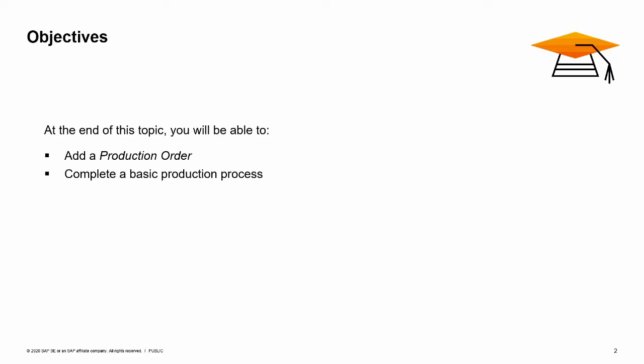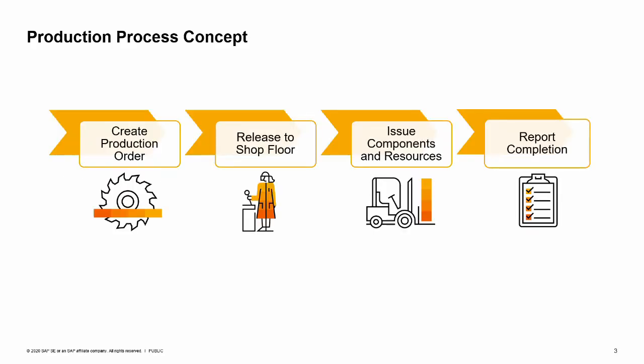At the end of this topic, you will be able to add a production order and complete a basic production process. The production process starts with creating a production order. This is the main document in the production process, and it records the progress of the production process for each item produced.